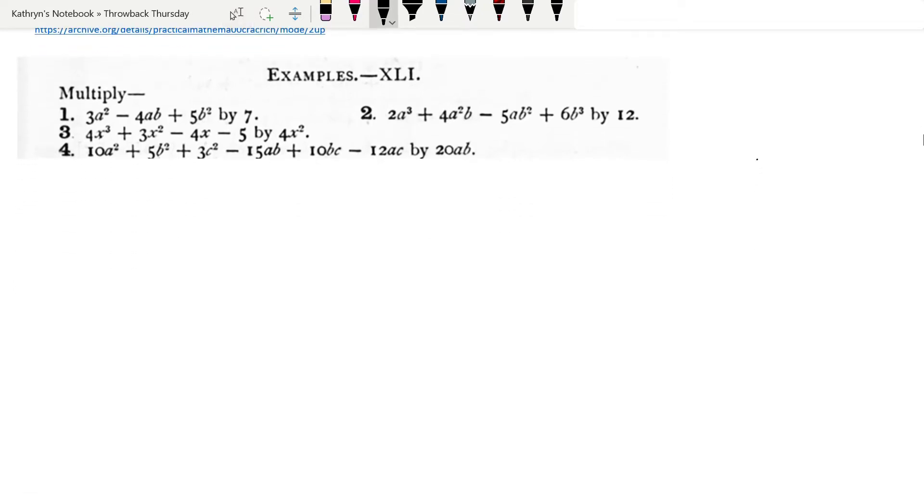We're going to multiply 3a² minus 4ab plus 5b² by 7. Now we're going to use the distributive property. So I'm going to multiply every piece by 7. We end up with 21a² minus 28ab plus 35b².